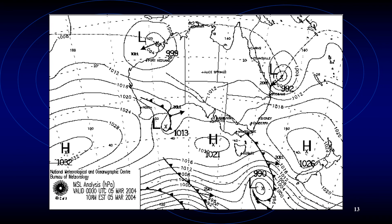Before I finish, I thought I'd show you another example of how a mean sea level analysis chart can be compared to an infrared image. Use both these examples and try to make a comparison — pause your screen, go forward and back, and see whether the information matches up between these two different types of charts. That's it — bye for now and I'll see you soon with my next video.